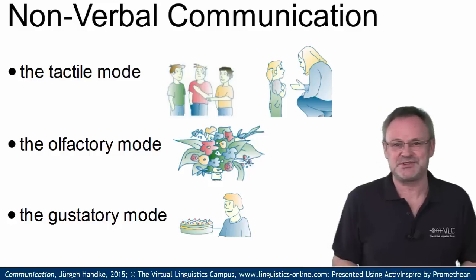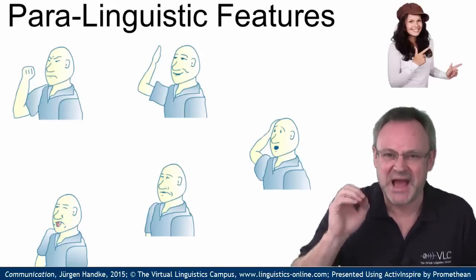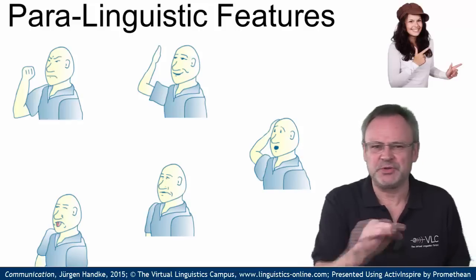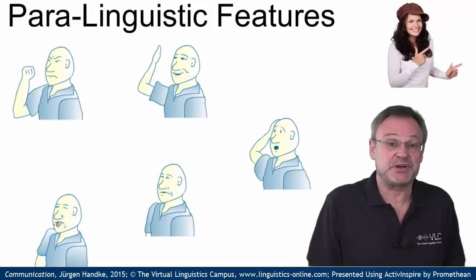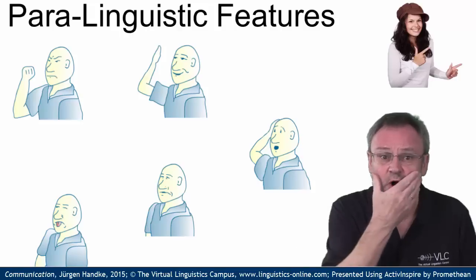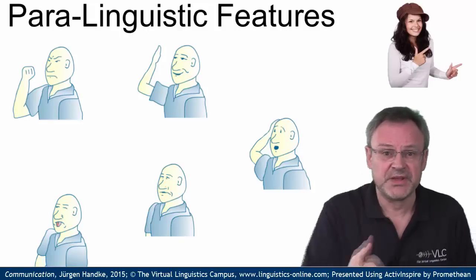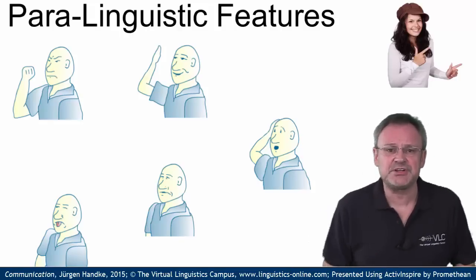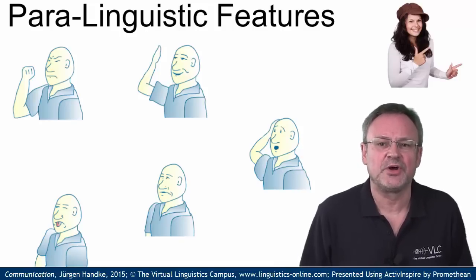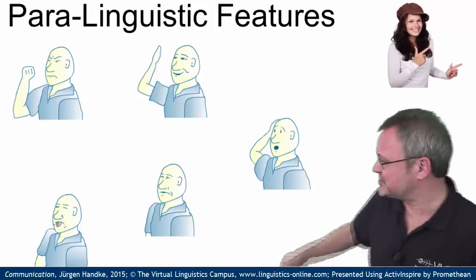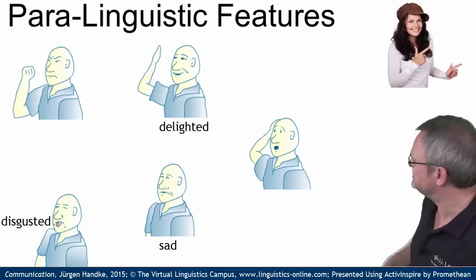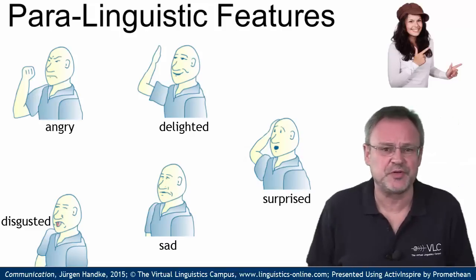Last but not least, we use a set of so-called paralinguistic features. Communication does not only utilize sounds to express meaning, but a variety of additional techniques such as gestures or facial expressions. Their function is to capture the attention of the interlocutor and then focus it on a particular object or event. Here are some examples: sad, delighted, disgusted, and so on and so forth.